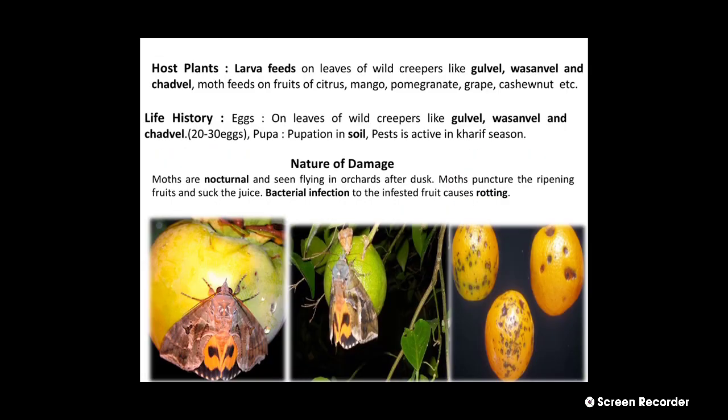The larvae feed on the leaves of wild creepers — gurvel, vasanvel, and sanvel — and the moths feed on fruits of citrus, mango, pomegranate, grapes, and cashew nut. In the life history, oviposition: the female moth lays their eggs on leaves of wild creepers like gurvel, vasanvel, and sanvel. Pupation takes place inside the soil, and this pest is mostly active in the current season or rainy season.